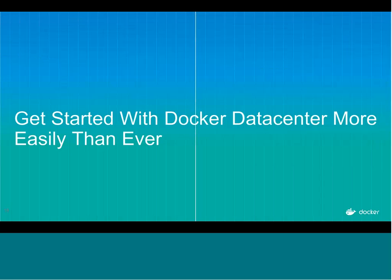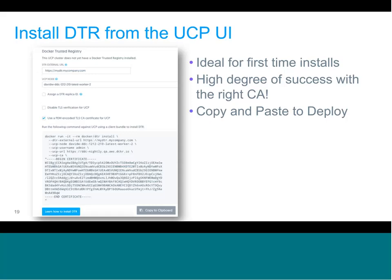It's now easier than ever to get started with Docker Data Center. One improvement is the ability to install DTR directly from the UCP UI or to build a custom install command. Once you've created a UCP cluster and added nodes, go to Admin Settings and the DTR sub-tab. From there you can set the external URL, the UCP node, a replica ID, and add either the PEM certificate or do an insecure install for evaluation — and quickly get the command to copy, paste, and run on the node to install DTR.